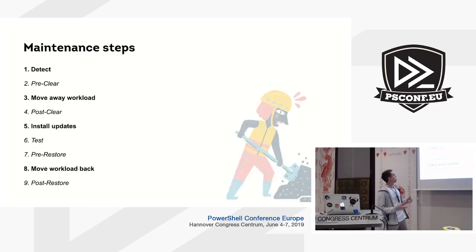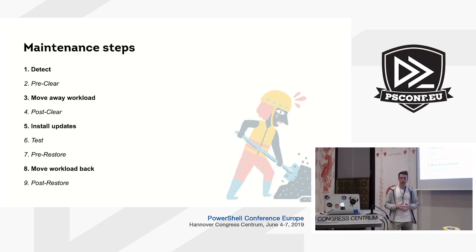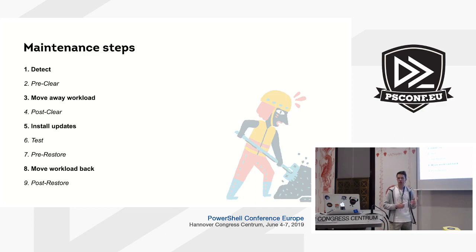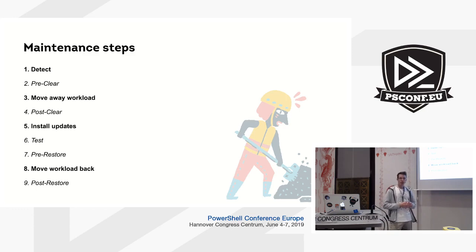How does the module actually perform the maintenance? First, we detect if a machine needs an update. We don't use any magic here — we just use the standard Windows Update client already installed on your machine, which means you should have a WSUS server in your infrastructure, or your machines must be able to connect to Microsoft update servers. Then the next step, we call it pre-clear. Steps marked in italics are where we call for external plugins, or as we call them, step scripts. Step scripts are just partial scripts where you can put any command you would like to be executed at that step.